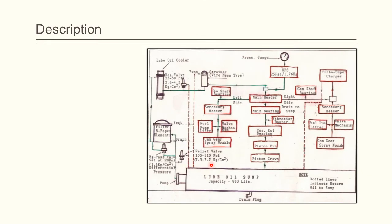The lube oil system consists of a lube oil sump, a pump, relief valve, bypass valve, filter assembly, a regulating valve, a lube oil cooler, a strainer, a main header and two secondary headers, and a heat exchanger in which water acts as a heat exchanger.